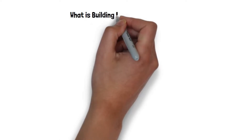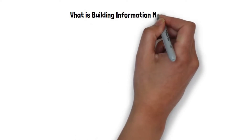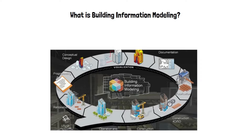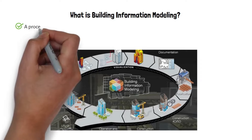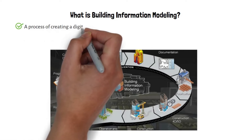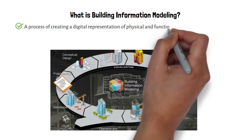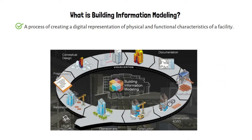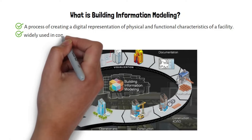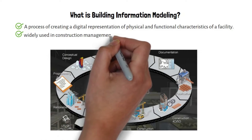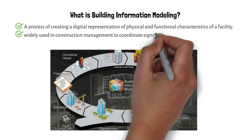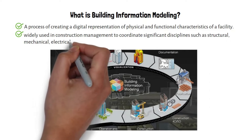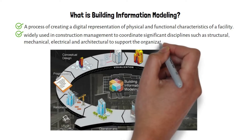What is building information modeling? Building information modeling, or BIM, is a process of creating a digital representation of the physical and functional characteristics of a facility. BIM is widely used in construction management to coordinate significant disciplines such as structural, mechanical, electrical, and architectural, to support organizational decision-making processes.